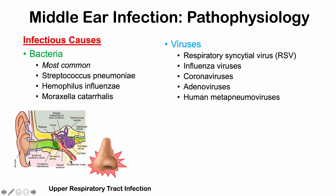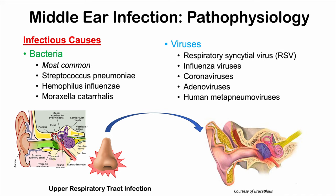Because of that inflammation and edema within the eustachian tube, this can lead to issues with drainage of the eustachian tube, causing a proliferation of infective organisms like bacteria and viruses that lead to acute otitis media. This eventually results in a buildup of bacteria, fluid, and inflammation in the middle ear.